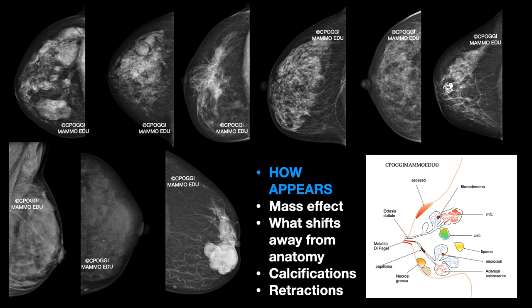There are often benign changes — most of the time appearing, for example, as density, even very large but well circumscribed, as distortion of the glandular profile, as density not generally present in normal anatomy. They may present as secretion, calcifications, as ectopic gland, swelling, or with a mass effect — such as to induce, as in this case, a retraction of the nipple.